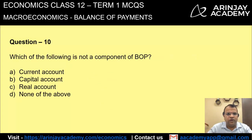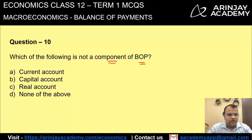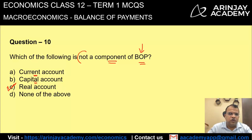Which of the following is not a component of balance of payment? The balance of payment account has two components: current account and capital account. Therefore, 'real account' is something which is not a component of the balance of payment account. The correct answer is option C.